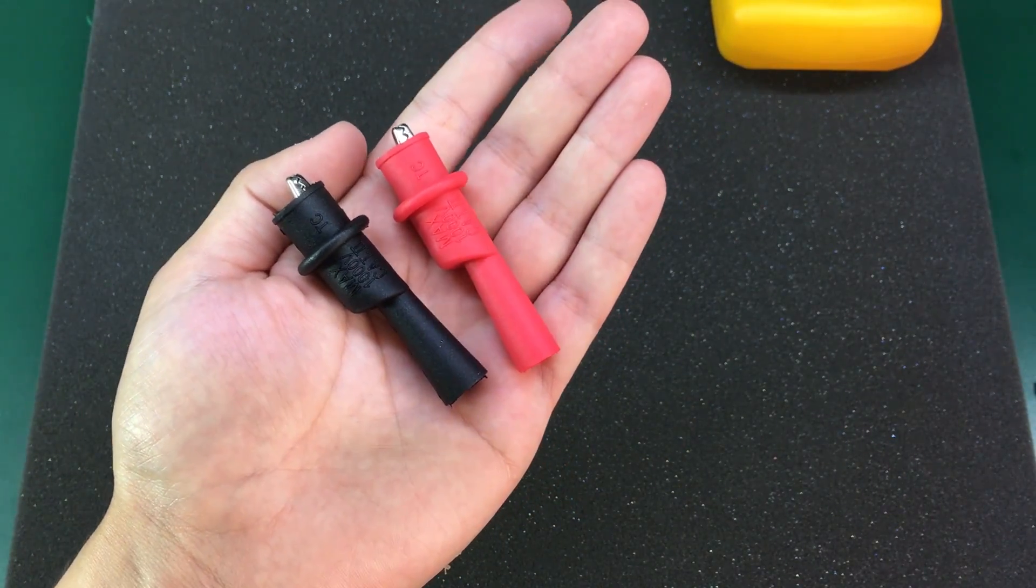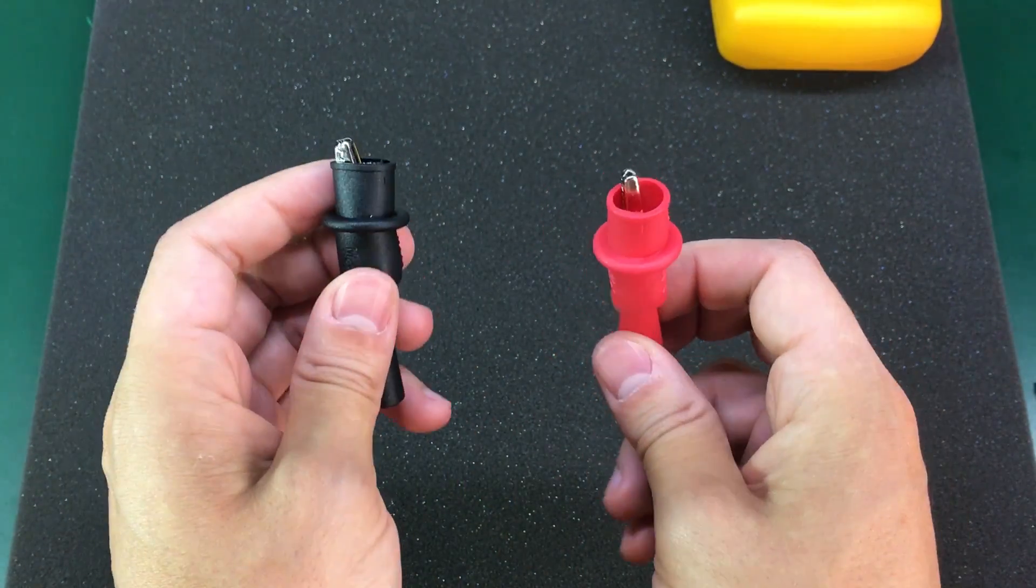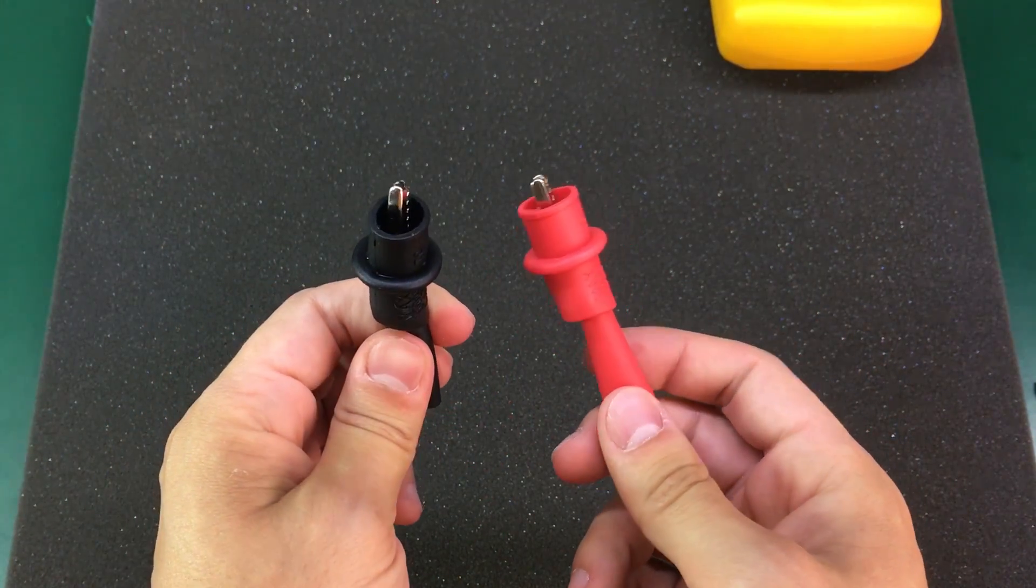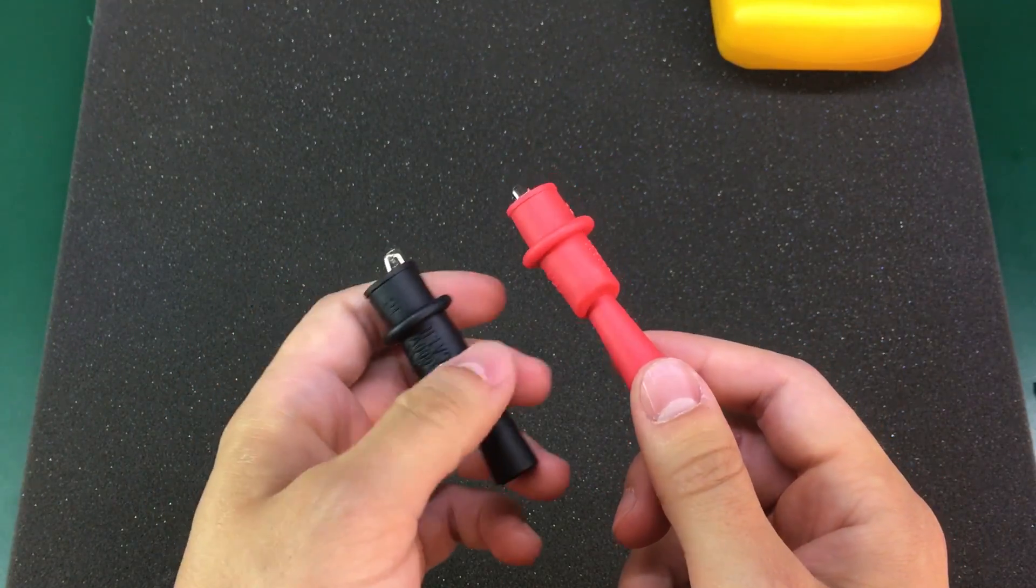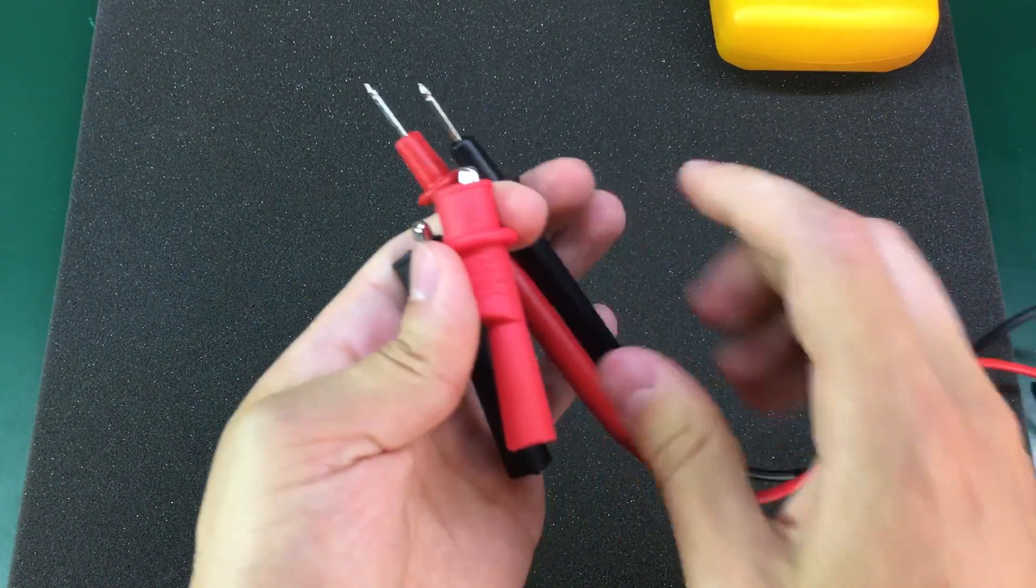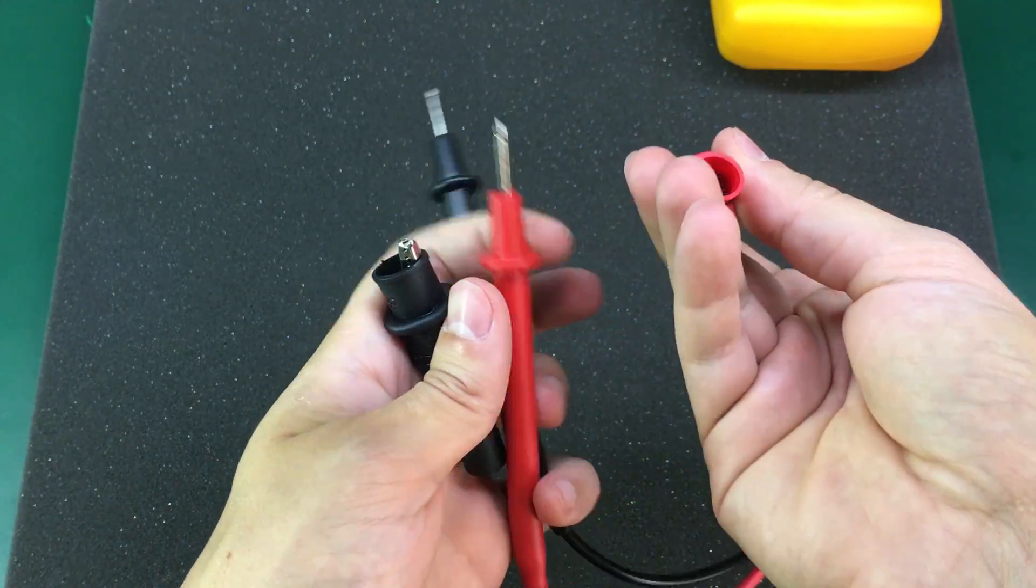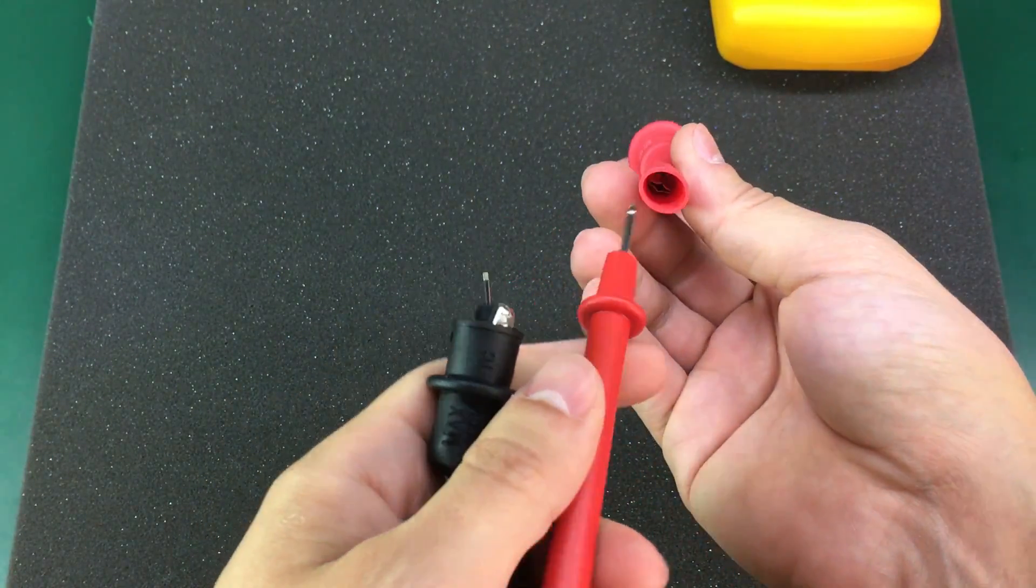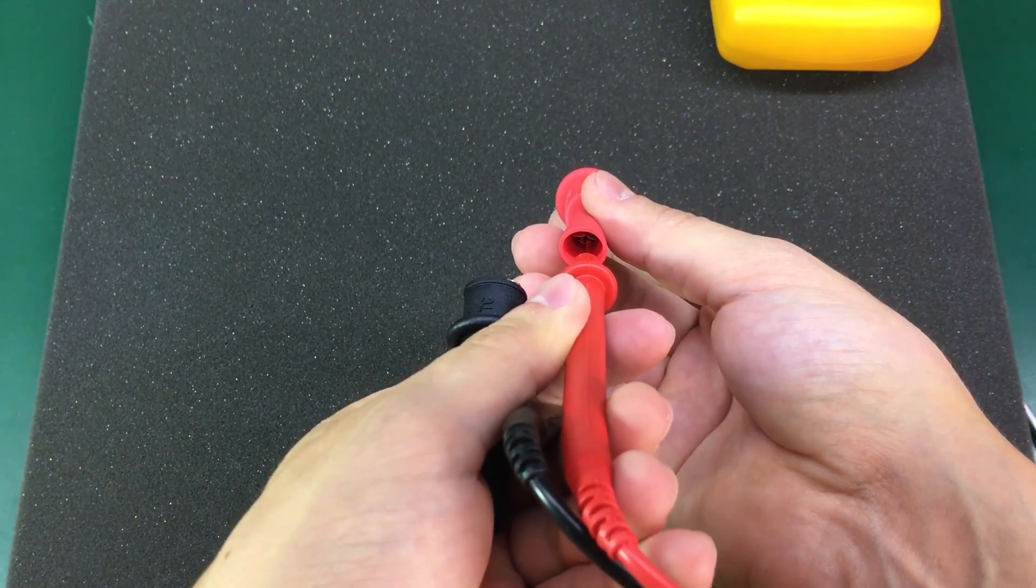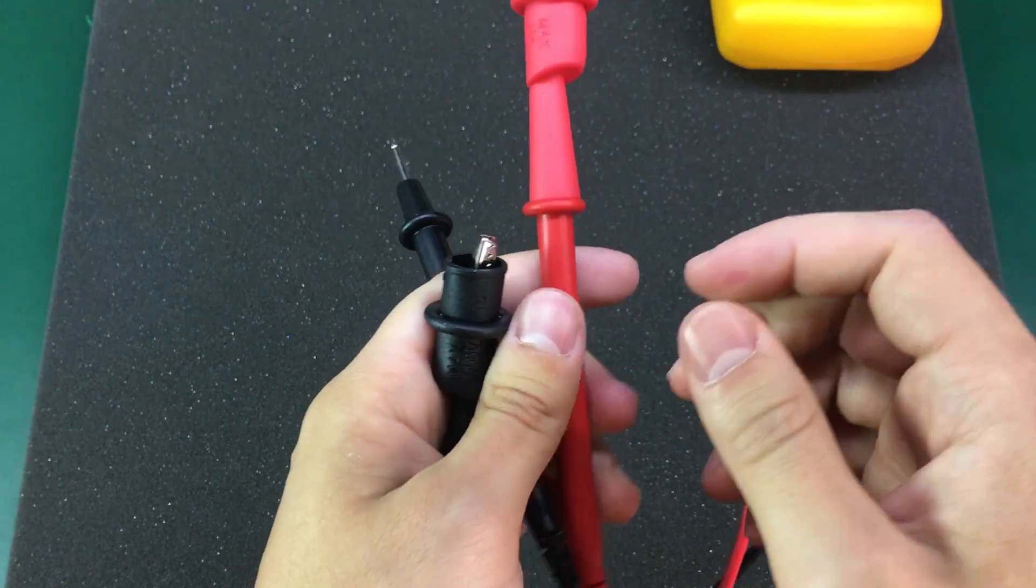Next up I have these multimeter alligator clips. These are the type designed to clip on the end of your standard multimeter test probes. So here are the test leads shown before, the Fluke ones and this is how the alligator clips go on the end of this multimeter probe. They go in like that.